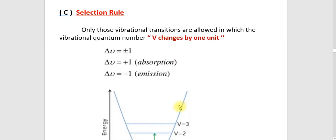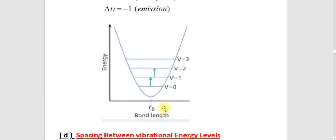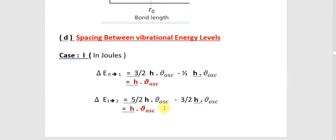We are entering into the main part: the selection rule, otherwise called the gross selection rule, for vibrational spectroscopy. We know that only those vibrational transitions are allowed in which the vibrational quantum number V changes by one unit — just like in rotational spectroscopy, where the change is plus one for absorption and minus one for emission.